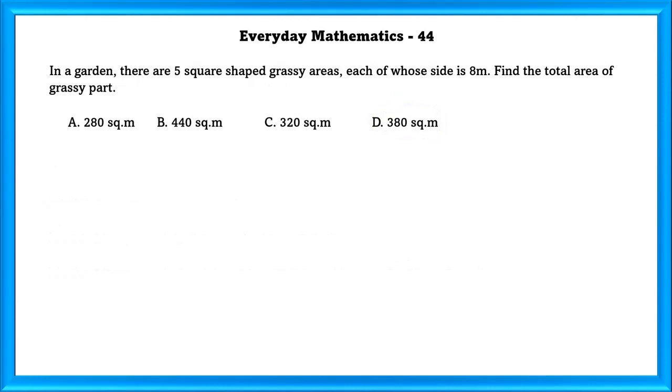Everyday Mathematics Question Number 44: In a garden, there are 5 square-shaped grassy areas, each of whose side is 8 meters. Find the total area of the grassy park.